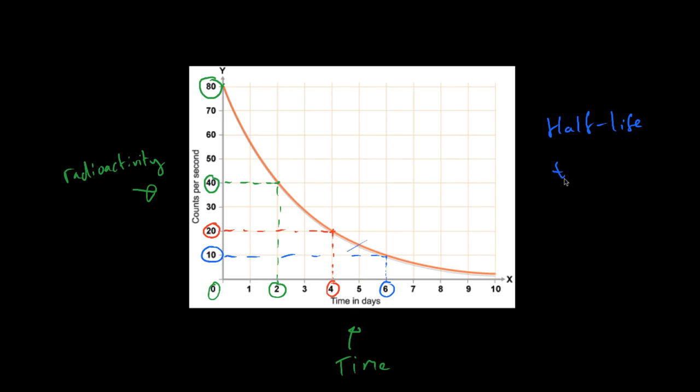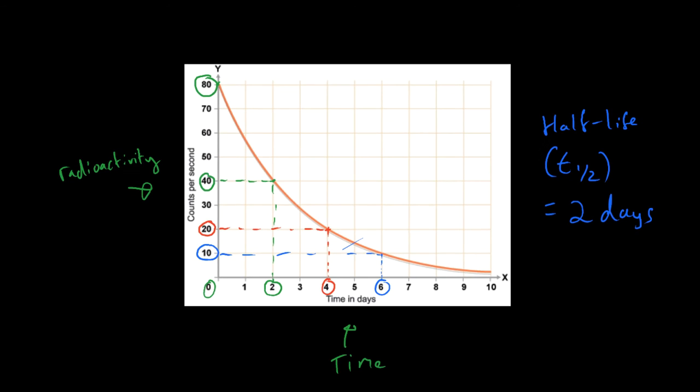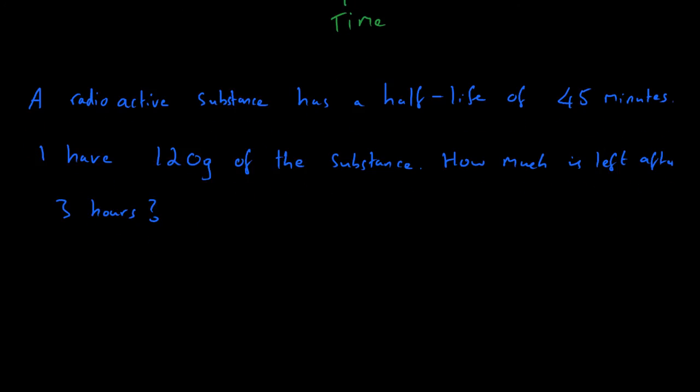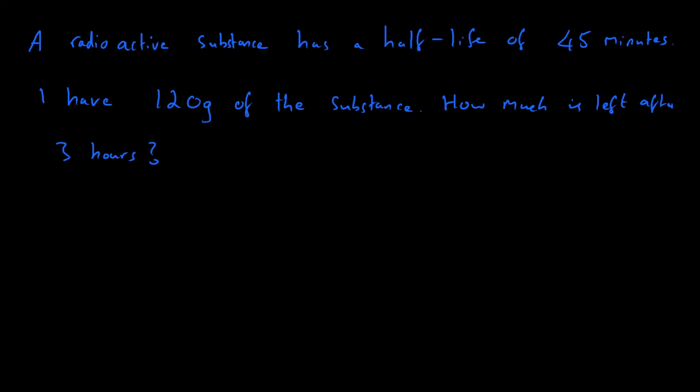So we can say that half-life, or t-half, is equal to two days for this particular radioactive substance or isotope. And let's finish up by having a look at one more question. It says: I have a radioactive substance and it has a half-life of 45 minutes. I have 120 grams of that substance. How much of it is left after three hours?